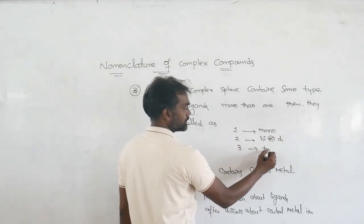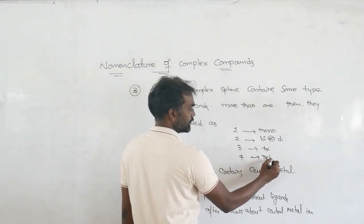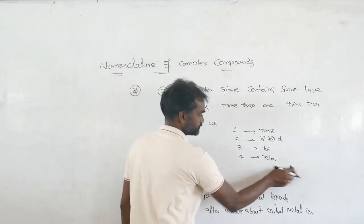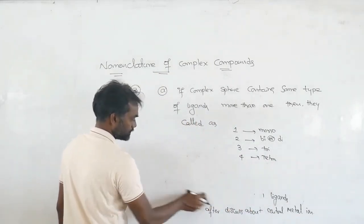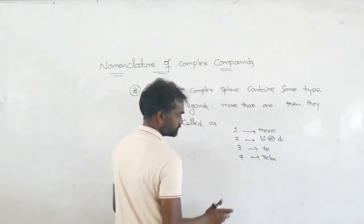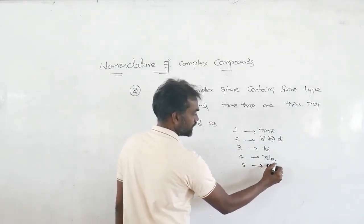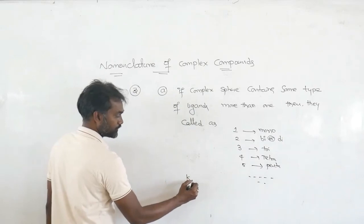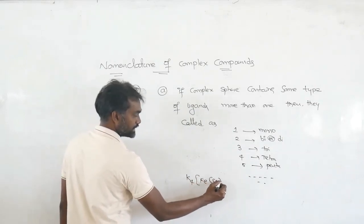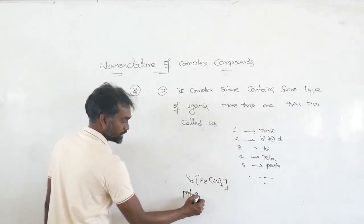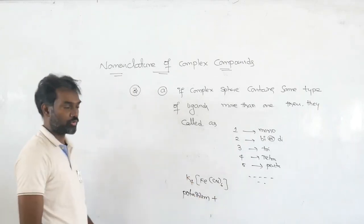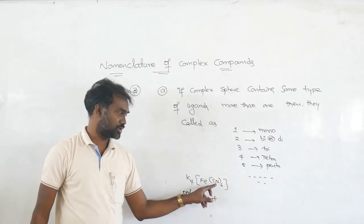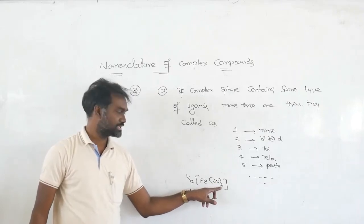If there are 4 of the same type of ligand, you write 'tetra'; if 5, you write 'penta'. Taking our example K4[Fe(CN)6]: we started with potassium. Potassium (the positive part) is named first. Next we go into the complex sphere. The same type of ligand CN- appears 6 times, so we use the prefix 'hexa'.